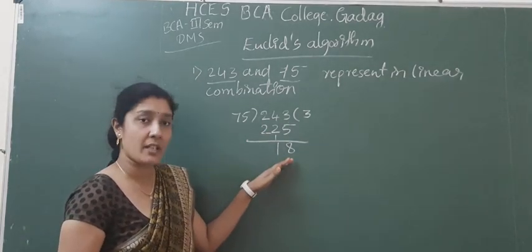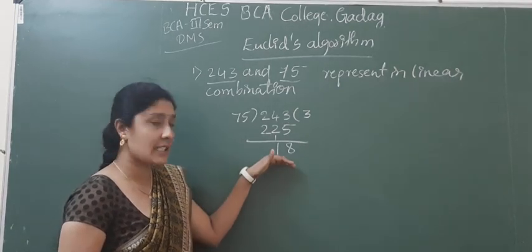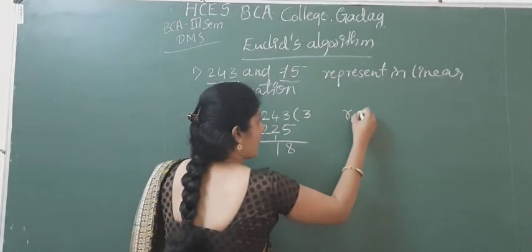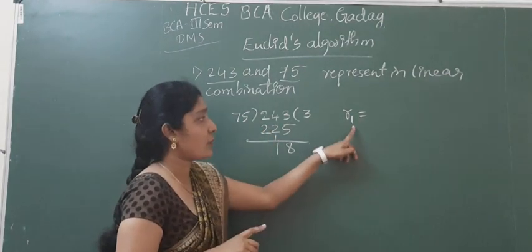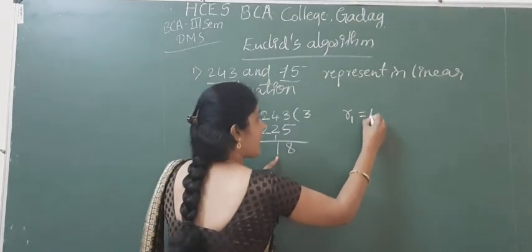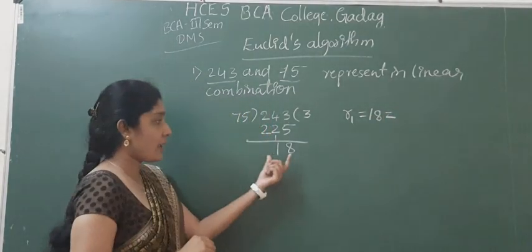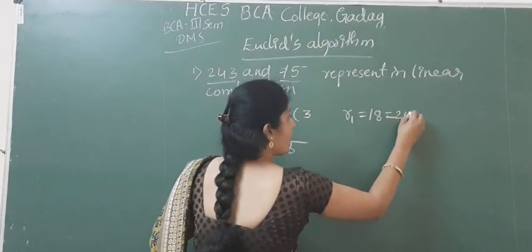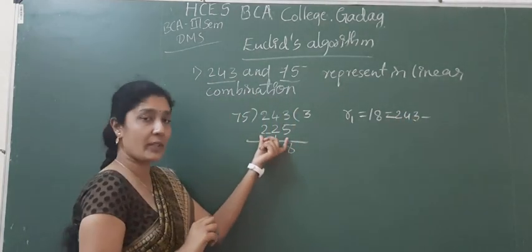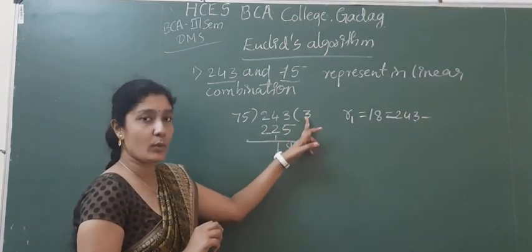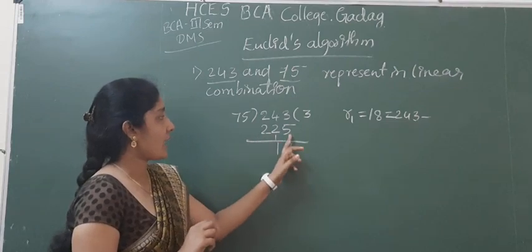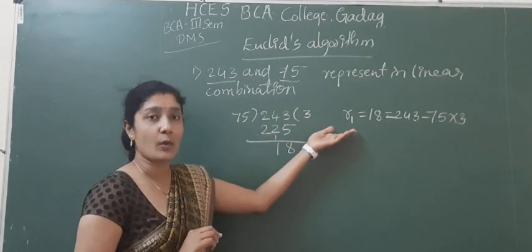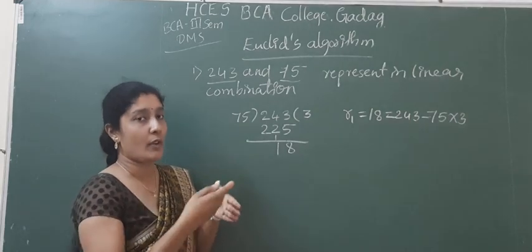We are supposed to get the remainder as 0, but we still did not get 0. So now we have to write the equation of the remainder. That is R1 — R stands for remainder, R1 means first remainder. So what is R1? R1 is equal to 18, which is nothing but 243 minus 225. And 225 is nothing but 75 into 3. So R1 = 243 − 75×3. This is the remainder equation of the first division.